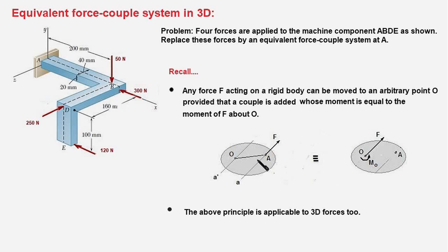The moment of that couple is equal to the force magnitude times the perpendicular distance from this point to the line of action of the force. So, as long as you add this moment, you can shift the point of application of the force from A to O. This force-coupled system is equivalent to this force in the sense the effect, the pushing and turning effect of this force-coupled system on this body is the same as the pushing and turning effect of this force acting at point A.